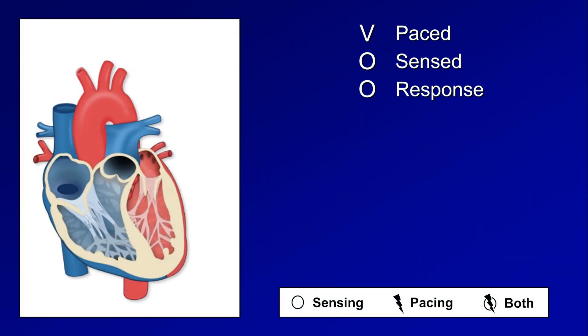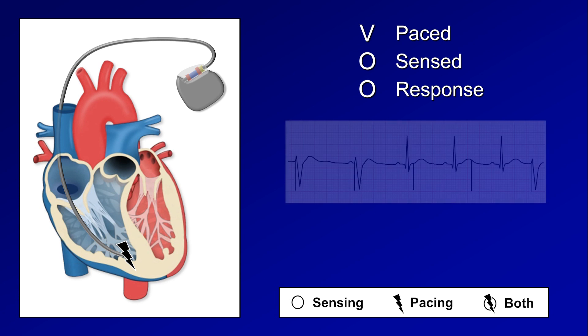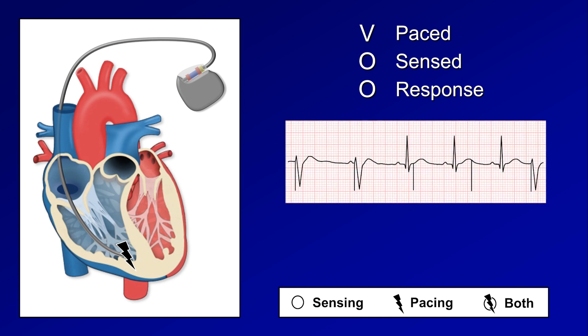Running through examples of the five most representative pacemaker modes, and for simplicity, assuming none are rate-responsive modes. Starting with the most basic mode, VOO. VOO mode uses a right ventricular lead, and that lead only paces — it has its sensing function turned off. Here is what a rhythm strip might look like for a patient in VOO mode.